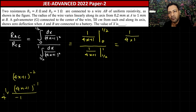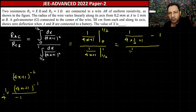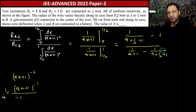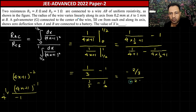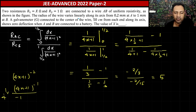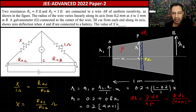For R_AC (limits 0 to 1/2): [-1/(4x+1)] from 0 to 1/2 = -1/(4·½+1) + 1/(0+1) = -1/3 + 1 = 2/3 — taking the magnitude, this is 2/3. For R_CB (limits 1/2 to 1): [-1/(4x+1)] from 1/2 to 1 = -1/5 + 1/3 = 2/15. So R_AC/R_CB = (2/3)/(2/15) = 5. Therefore x = 5 ohm.